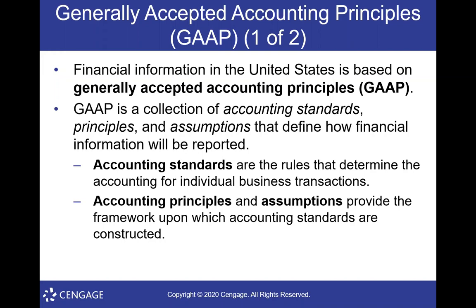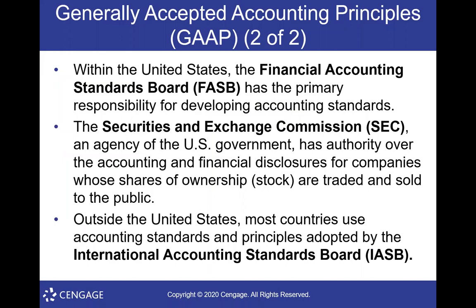Generally Accepted Accounting Principles is the financial system of the United States. It's different in other countries, but here we use GAAP. It's a collection of accounting standards and rules — or like the pirate code, guidelines — that we use. They include accounting standards, which are the actual rules, and principles, which tell us if a rule doesn't apply, what's the guiding principle? Is this okay or not okay? Whenever it says GAAP, that's just how we do accounting in the U.S. and the rules we're held to.